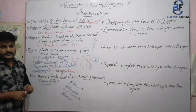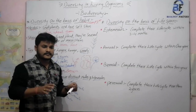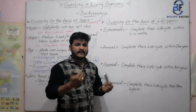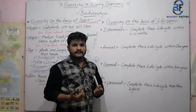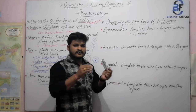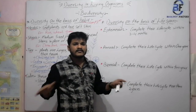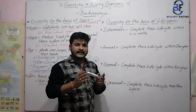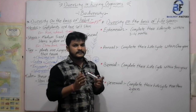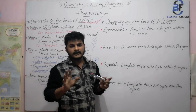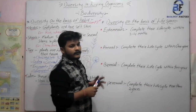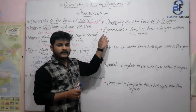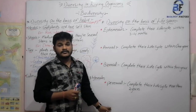Next, diversity on the basis of life span. Everything in this surrounding has a certain type of life period, and through this life period it survives a number of stages — from childhood to adulthood to old age to death. According to this life span, plant life is again divided into four types: ephemeral, annual, biennial, and perennial.